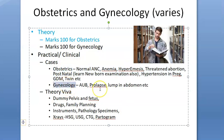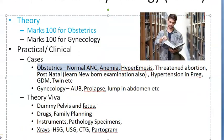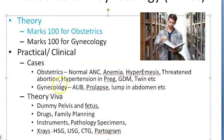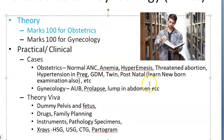For practical clinicals, you will have one obstetric case and one gynecology case - this varies from college to college. In obstetrics you will get a normal pregnant female, or one with anemia, hyperemesis, threatened abortion, hypertension in pregnancy, gestational diabetes mellitus, twin pregnancy, or a postnatal case where you will also have to do the newborn examination.